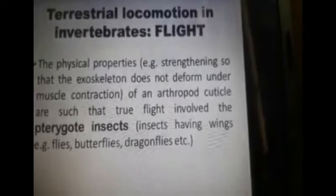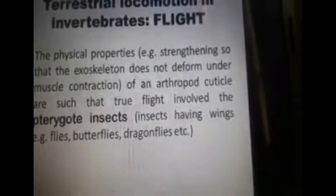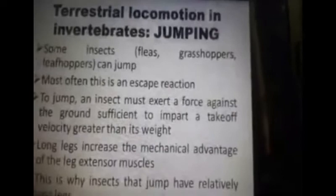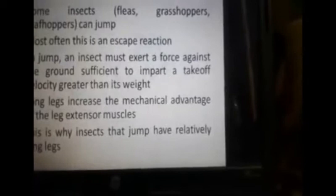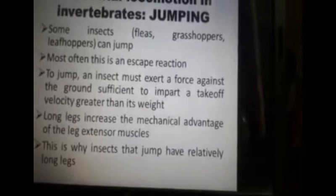Terrestrial locomotion in flight. The physical properties of an arthropod cuticle are such that true flight is involved in pterygote insects — those insects which have wings, like flies, butterflies, and dragonflies. Some insects are also involved in jumping, such as fleas, grasshoppers, and leafhoppers.